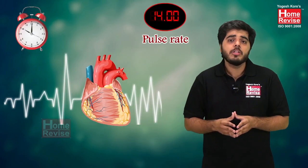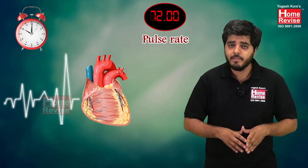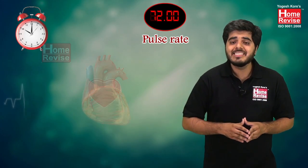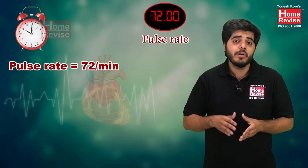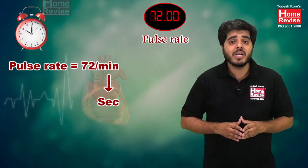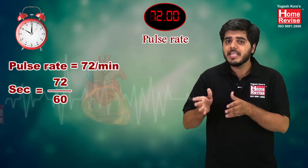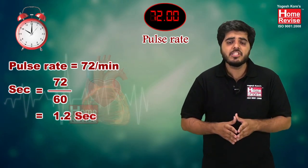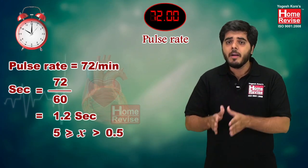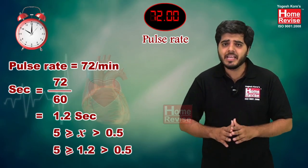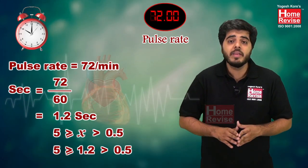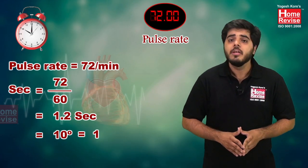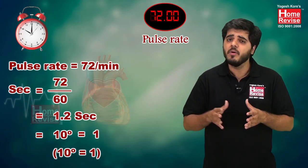One more example: our pulse rate is 72 pulses per minute. Remember, always convert any quantity to its standard SI unit first. Since the SI unit of time is seconds, we convert: 72 divided by 60 = 1.2 per second. Now check the range: x = 1.2 is greater than 0.5 and less than 5, so it is in range. There is no explicit power of 10, meaning it is 10⁰. So the order of magnitude is 10⁰. Remember, 10⁰ = 1. This is how you calculate order of magnitude in a simple manner.